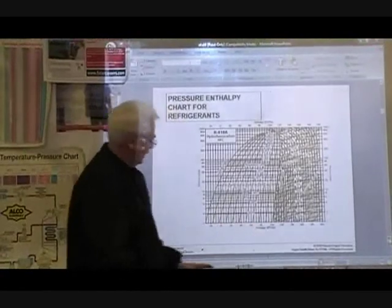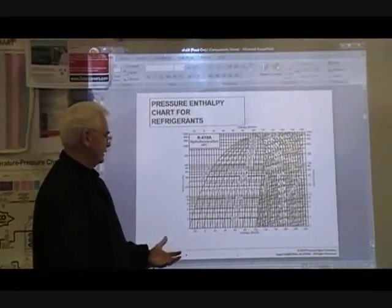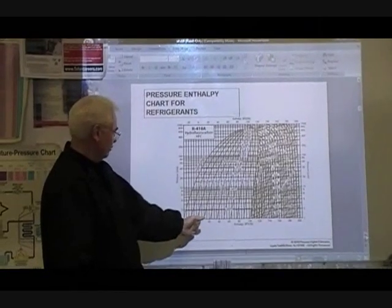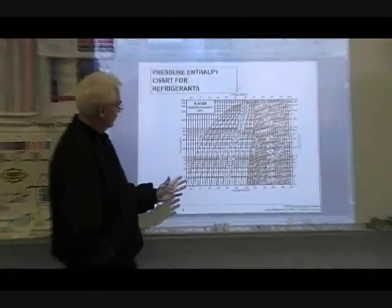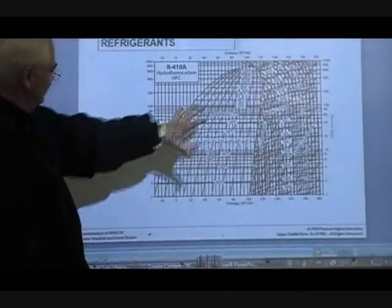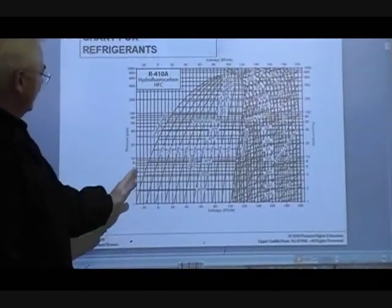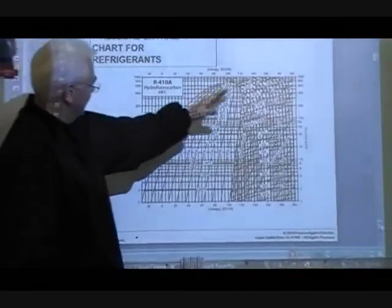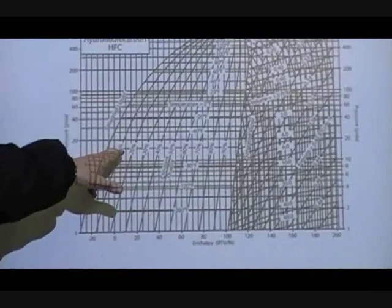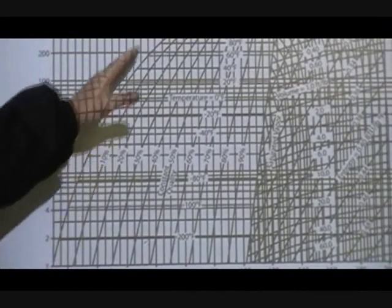The enthalpy is BTU per pound. The definition of enthalpy is the amount of heat contained in the substance from a starting point, which starts at zero on this side. If you notice the lines — where it says saturated liquid — think of this as a dome. Over on the left-hand side is saturated liquid. The 10% line means 10% vapor remaining and 90% liquid. When you get to the far line, the refrigerant is completely saturated — 100% liquid.